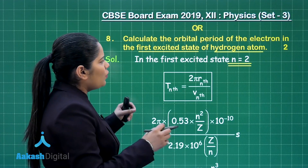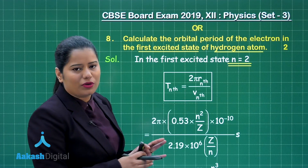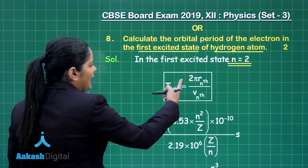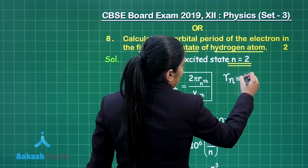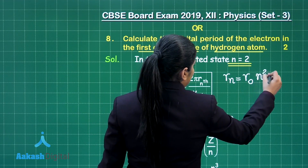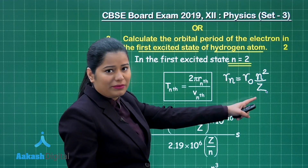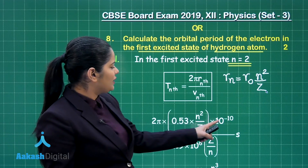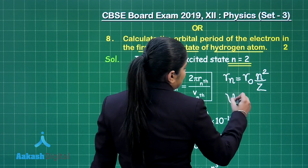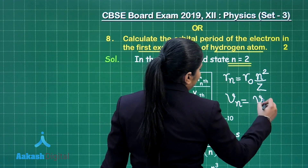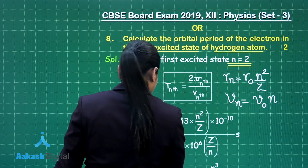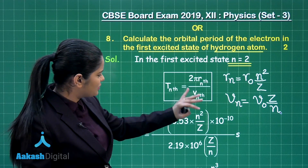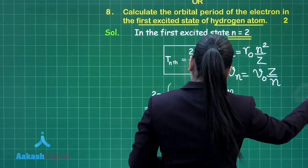For calculating the orbital period for any particular orbit, T_n equals 2 pi r_n divided by v_n. Here r_n equals r-naught times n-squared divided by z, where z is the atomic number, n is the orbital number, and the value of r-naught is 0.53 into 10 to the power minus 10. Similarly, v_n equals v-naught times z divided by n, where v-naught is 2.19 into 10 to the power 6. When you substitute the values, you will get the final result.